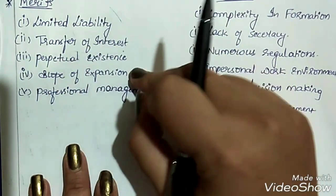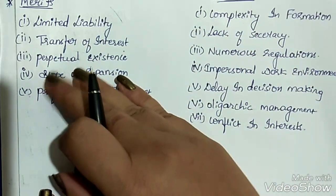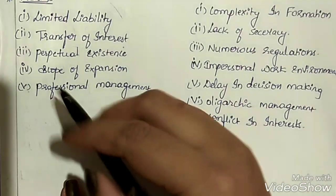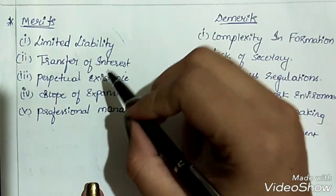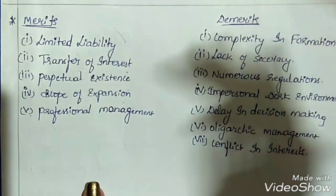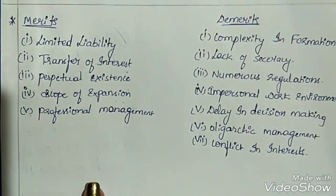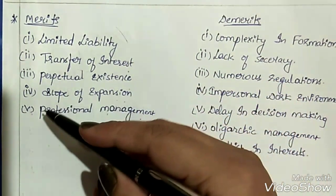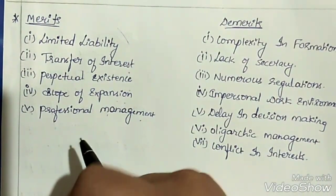Third merit is perpetual existence — it has perpetual succession and can only be liquidated by the act of law. Death, lunacy, or insolvency of owners will not affect it, hence there is continuity. Fourth is scope for expansion — there is no deficiency of capital because the company can invite the general public to invest, giving it a large scope for expansion. Fifth is professional management — with no capital deficiency, the company can appoint professional experts in management to manage all business activities.